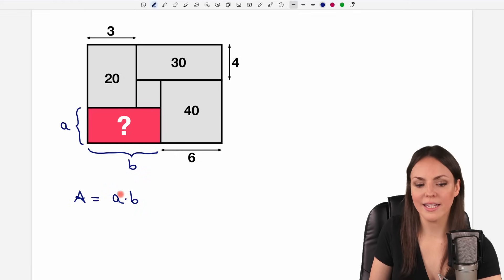I don't have a yet, I don't have b yet, so I cannot find the area immediately, but we could take a look at our other rectangles because we have more information there. So, for example, if we take a look at this rectangle first,